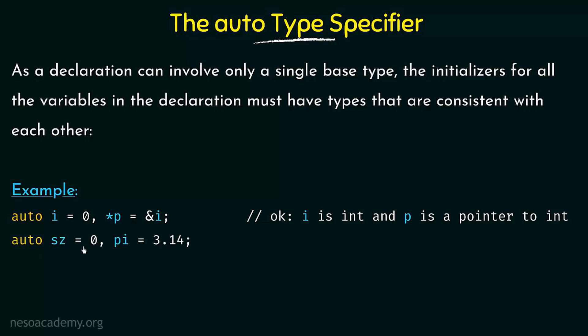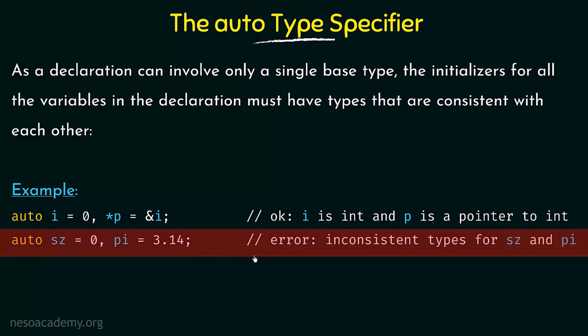Next, consider auto sz=0 and pi=3.14. Is this correct? The compiler deduces sz as an integer because it equals 0, and the same integer type has to be applied to pi as well since they are declared in a single line. But pi has the value 3.14 which is a double or float type. This is actually an error — it is an inconsistent type. We must ensure that the initializers for all variables in a declaration have types that are consistent with each other. This is one thing to keep in mind while using the auto type specifier. Thank you for watching and see you in the next one.